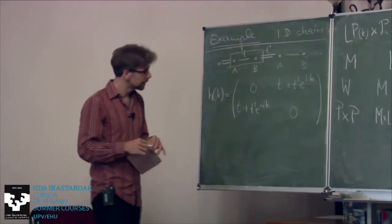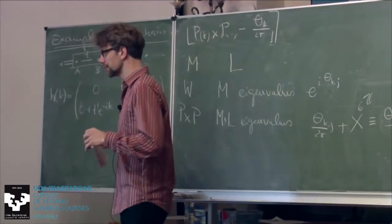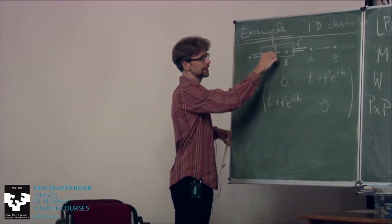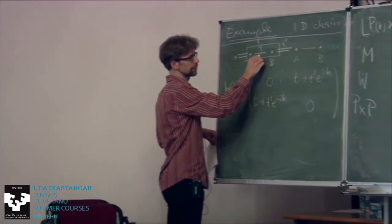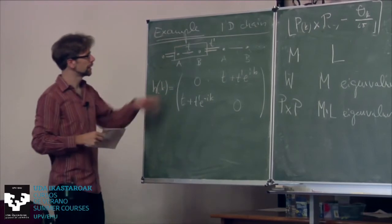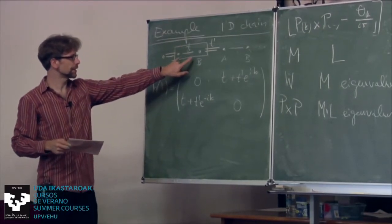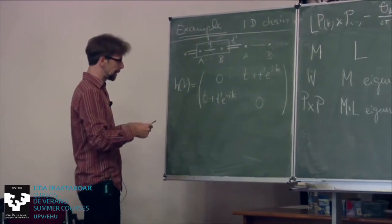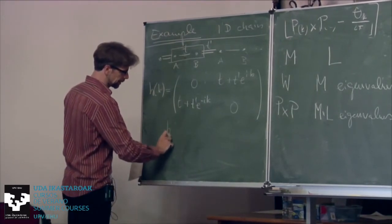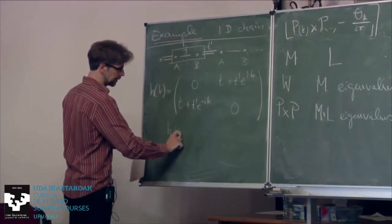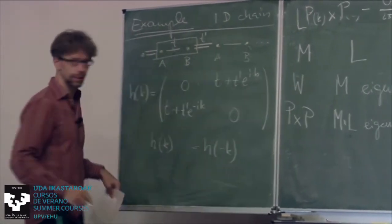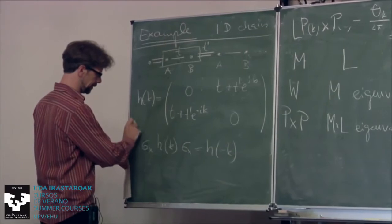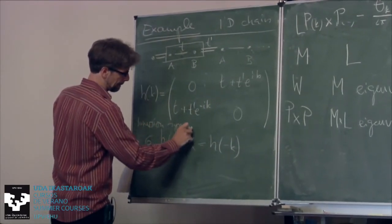That system has an inversion symmetry. The inversion center can be chosen at the middle of a bond, mapping A↔B and K↔−K. So the inversion operator is a unitary matrix connecting H(K) and H(−K), which is σ_x. There is another symmetry that makes this the Su-Schrieffer-Heeger model: the so-called chiral symmetry.